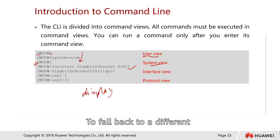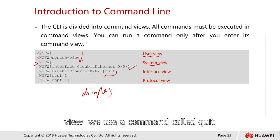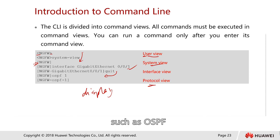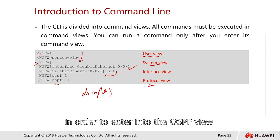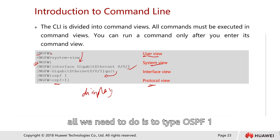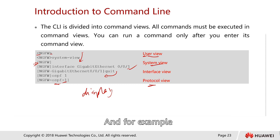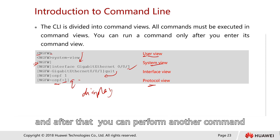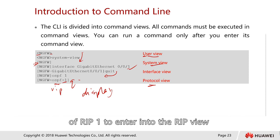To fall back to a different view, use the command 'quit'. For example, if you want to go to the OSPF protocol view, type 'ospf 1' (ospf space and the process ID, e.g., number one) to enter the OSPF view. If you want to switch to a RIP view, type 'quit' first and then type 'rip 1' to enter the RIP view.